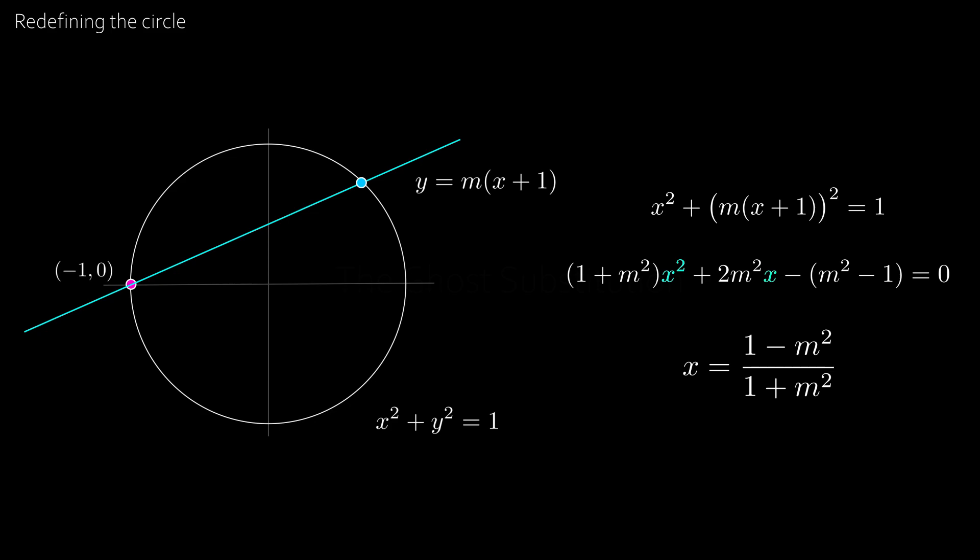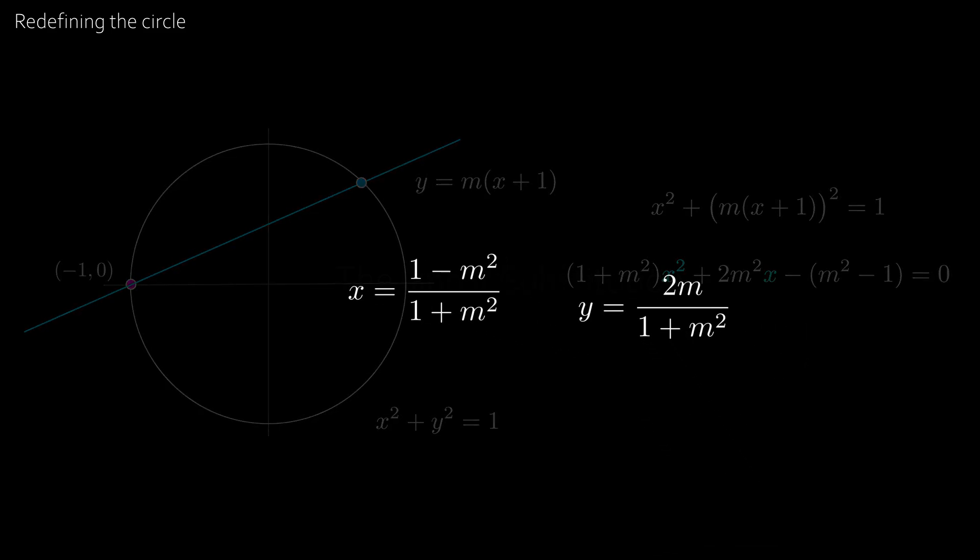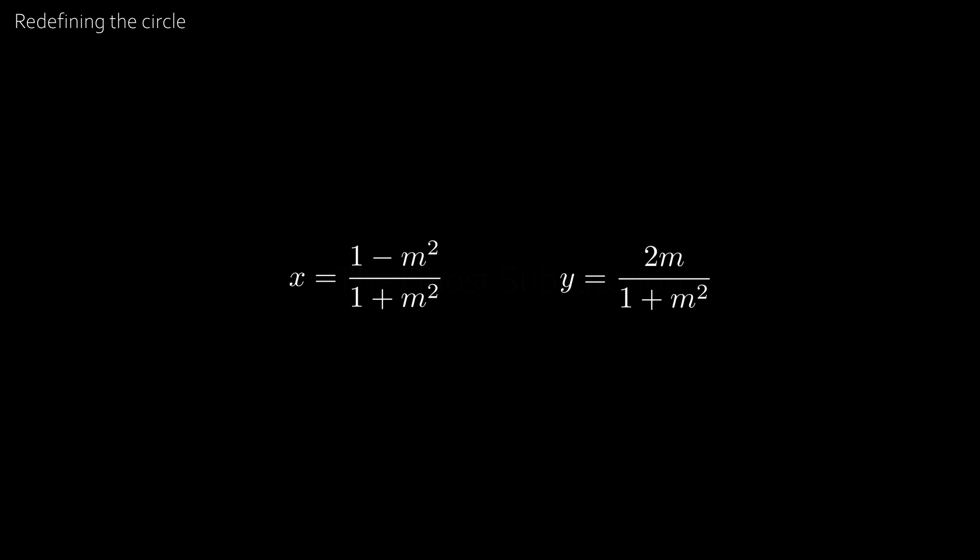and y equal to 2m all over 1 plus m squared. And this is our redefined equation for the unit circle.